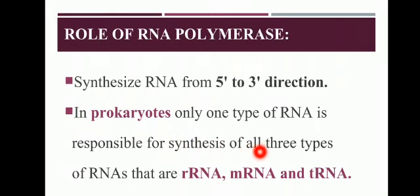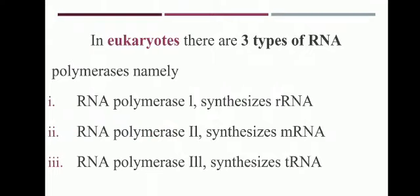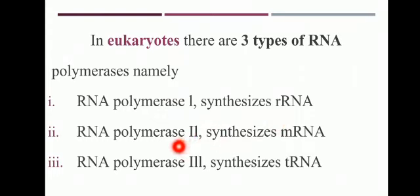In prokaryotes, there is only one RNA polymerase enzyme which makes all three types of RNA: mRNA, rRNA, and tRNA. But in eukaryotes, there are three types of RNA polymerase. RNA polymerase I is responsible for the formation of ribosomal RNA. RNA polymerase II synthesizes messenger RNA. And RNA polymerase III is responsible for the formation of transfer RNA. Remember: prokaryotes have one RNA polymerase making all three types, while eukaryotes have three separate RNA polymerases.